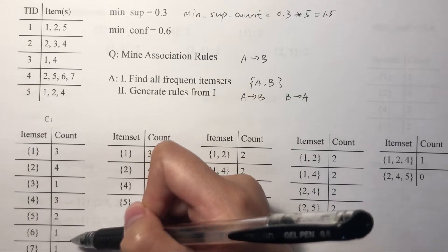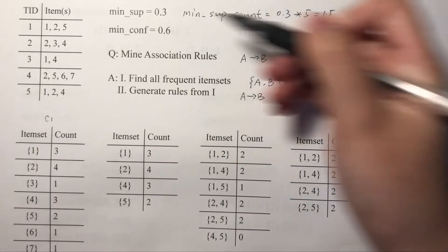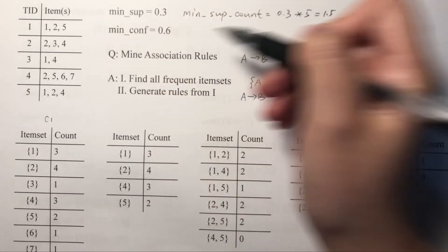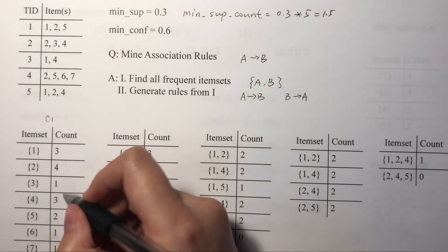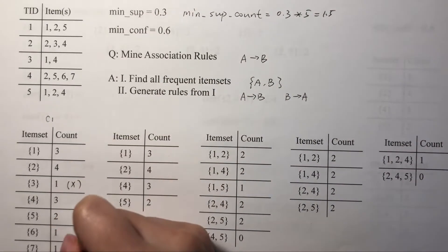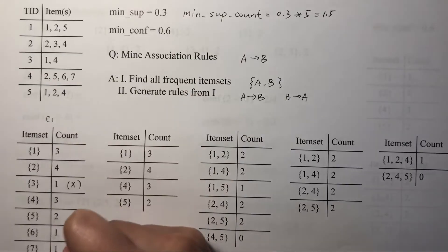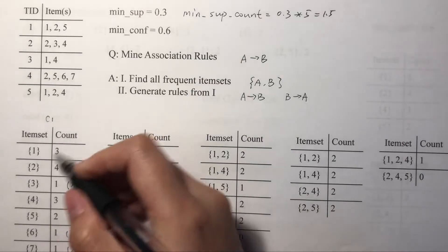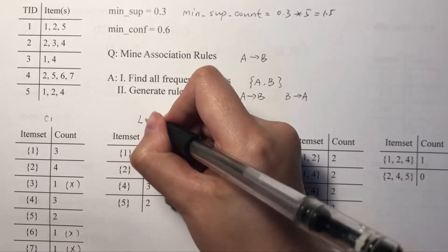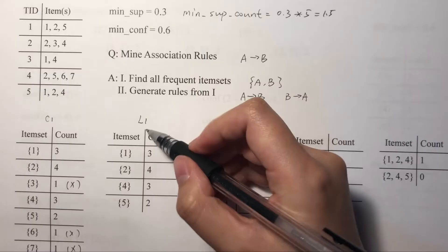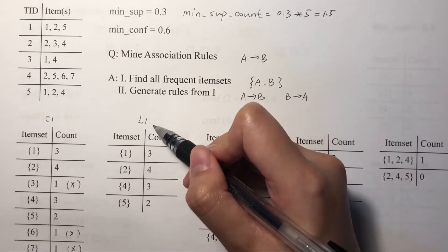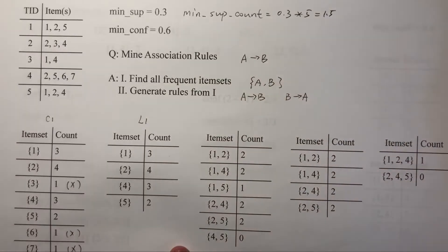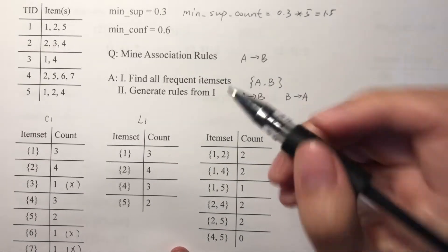We get rid of those candidates that do not satisfy the minimum support count — this one, this one, and this one — and after this we get L1, the frequent itemsets for level one. Now we can level up to level two.